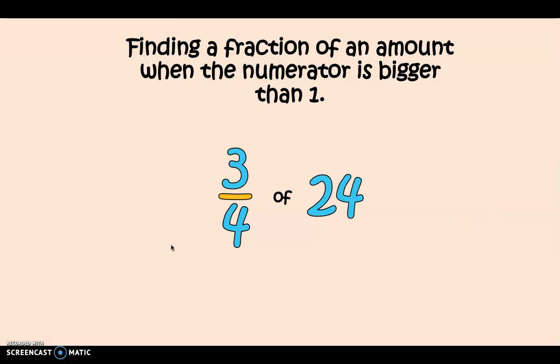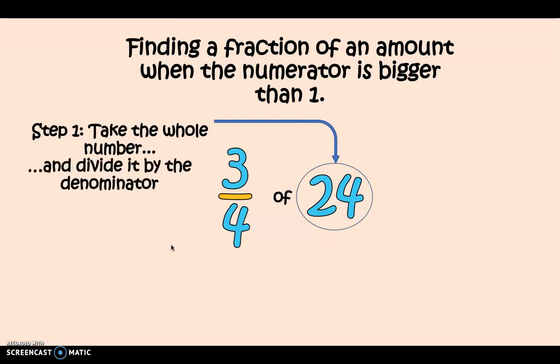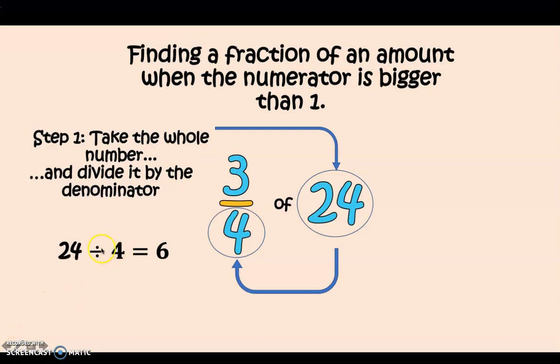Let's have a go at another one together. I've got 3 quarters of 24. So again I'm going to take my whole number which we know is 24. I'm going to divide it by my denominator which in this case is 4 again. 24 divided by 4 equals 6. So 24 divided by 4 equals 6.